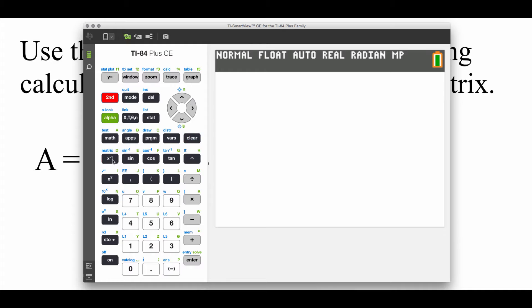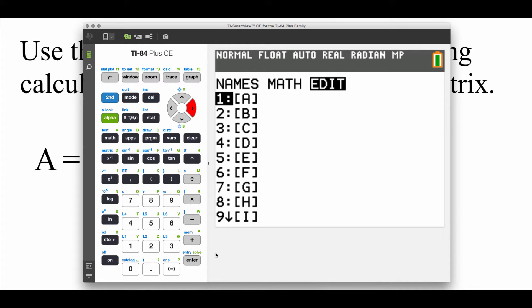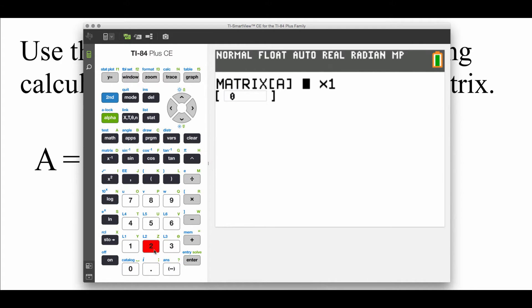If I fire up my calculator and go second matrix, let's go over to edit and enter this into matrix A. It was a two by two matrix. So let's enter those values in. We got one, four, negative one, negative three, and then I'm going to second quit out of there.